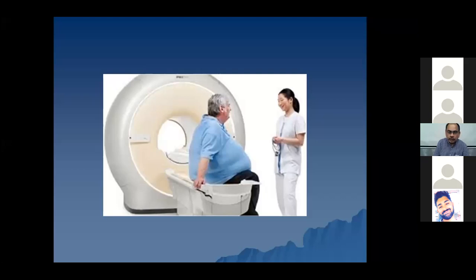Here you can see a problem - the patient is unable to go into the gantry due to his or her size. That is one of the disadvantages whenever a gantry is used, either in CT or MRI or PET scan. The table is compatible for a particular weight, and patients who are above that weight cannot be placed on that particular table.